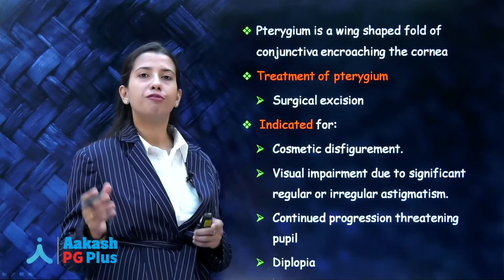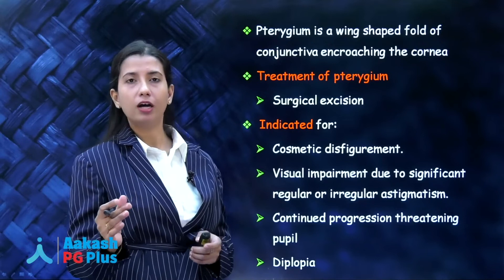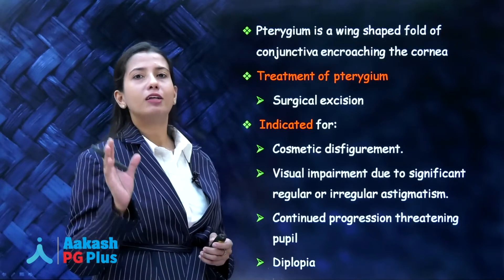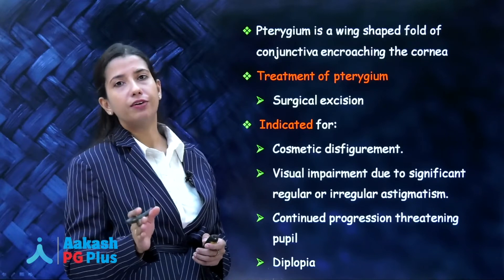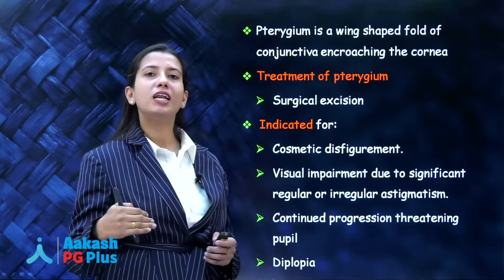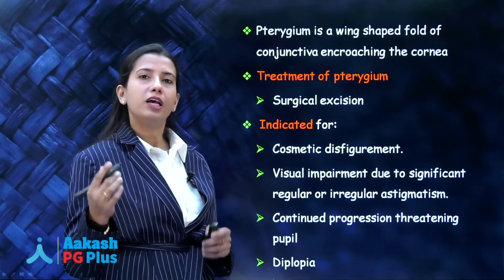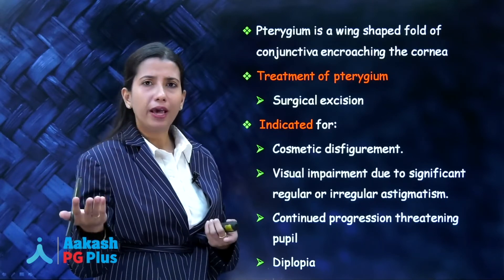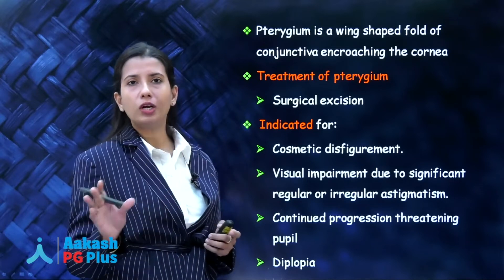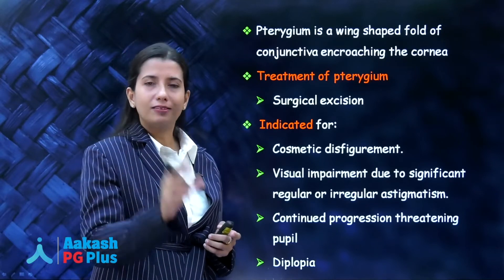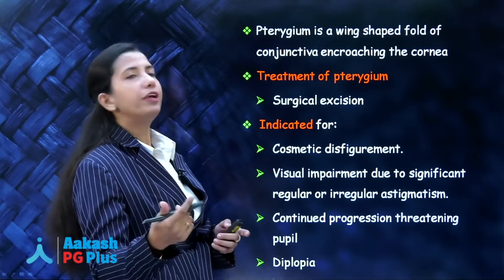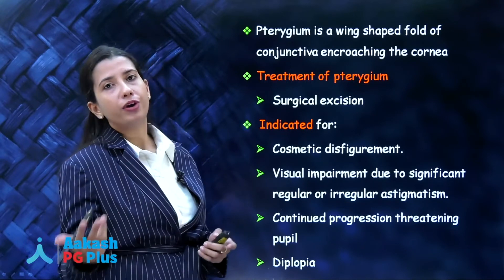Pterygium is a wing-shaped fold of conjunctiva encroaching upon the cornea — a kind of fibroelastotic degeneration. For treatment, we surgically excise it. Leaving it bare has very high recurrence chances, so these days we don't leave it bare. We excise it and then do a conjunctival autograft or amniotic membrane grafting.